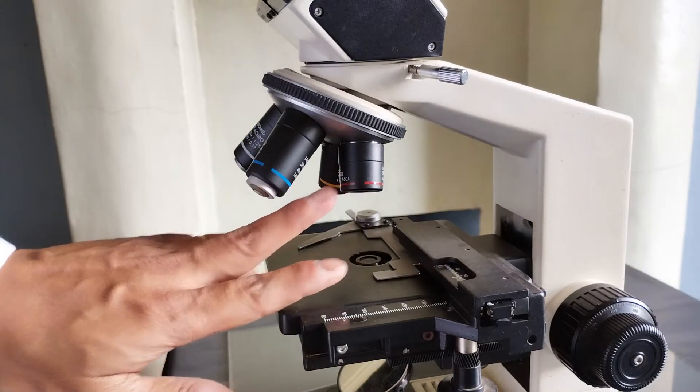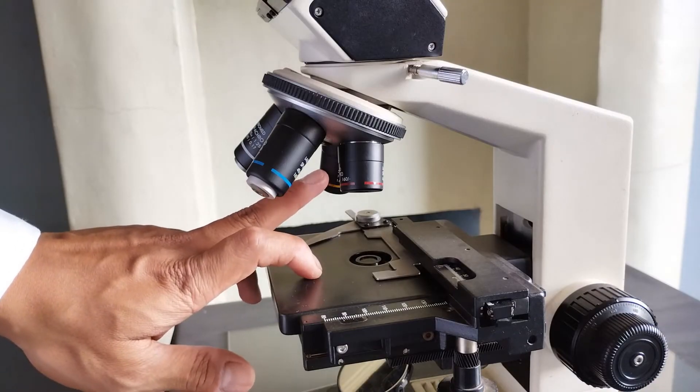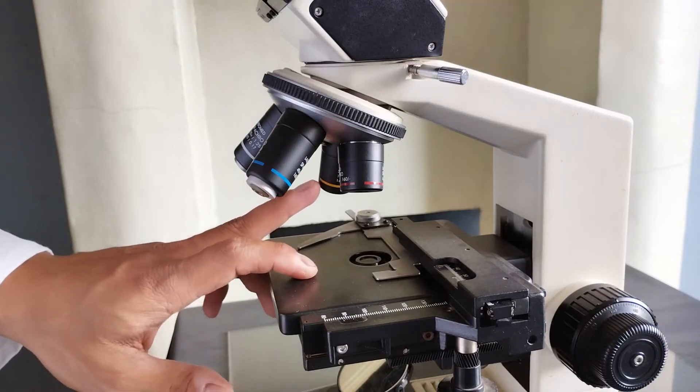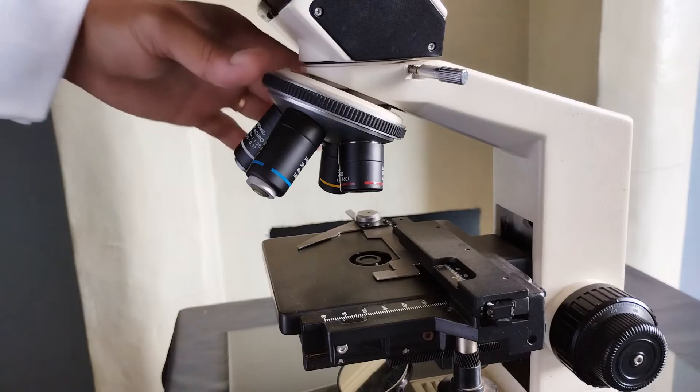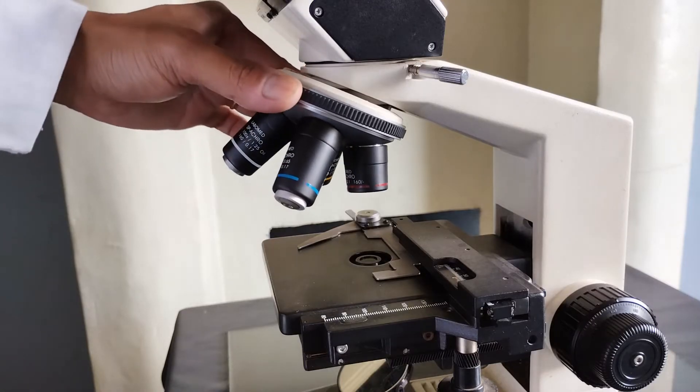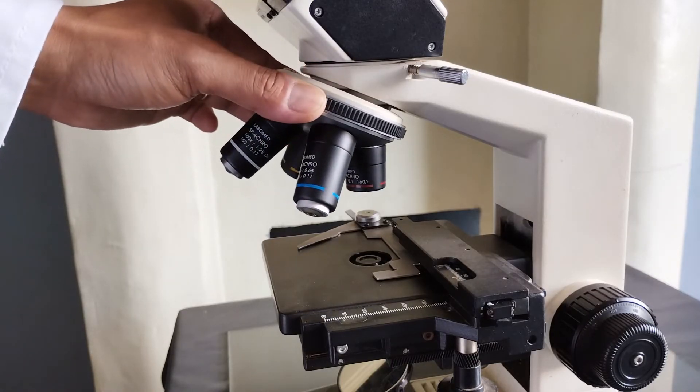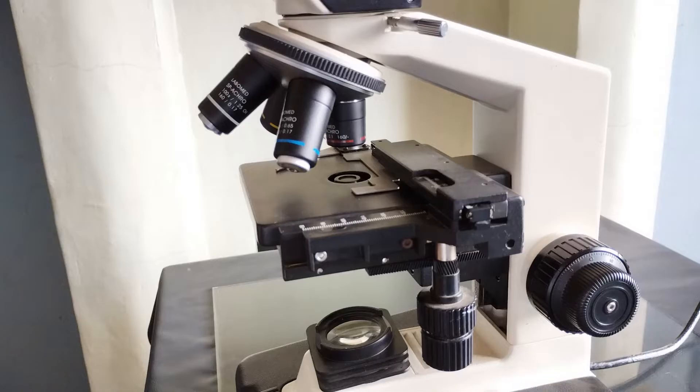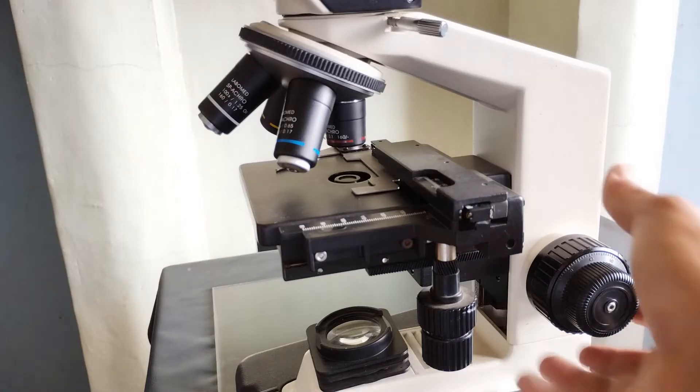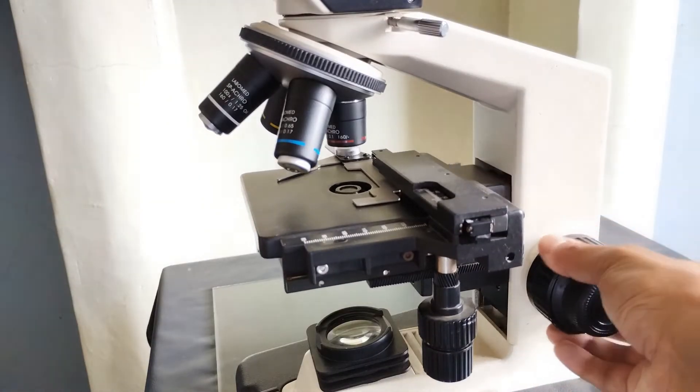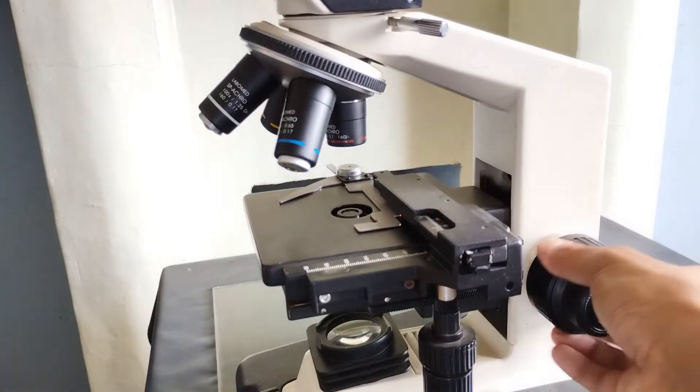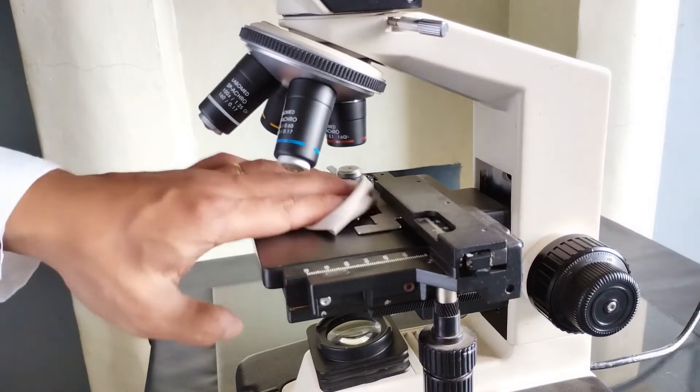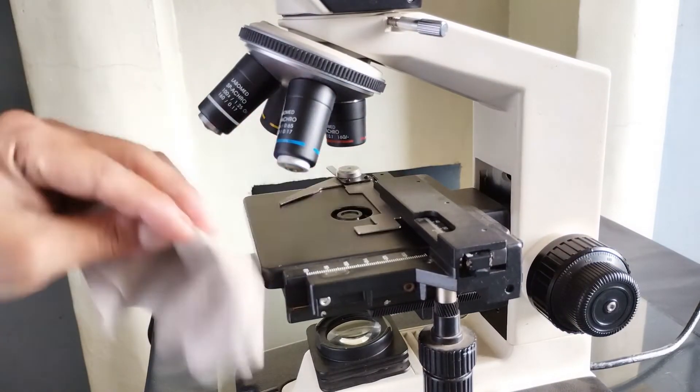Position a low power objective lens either the 4x or the 10x lens in line with the hole in the center of the stage. To do this, rotate the nose piece until one of the low power objective lenses clicks into position and aligns itself with the body tube and the hole in the center of the stage. Using the coarse adjustment knob, lower the stage down and away from the objective lens. Wipe the stage with a clean piece of cloth or lint-free tissue to remove dust and debris.